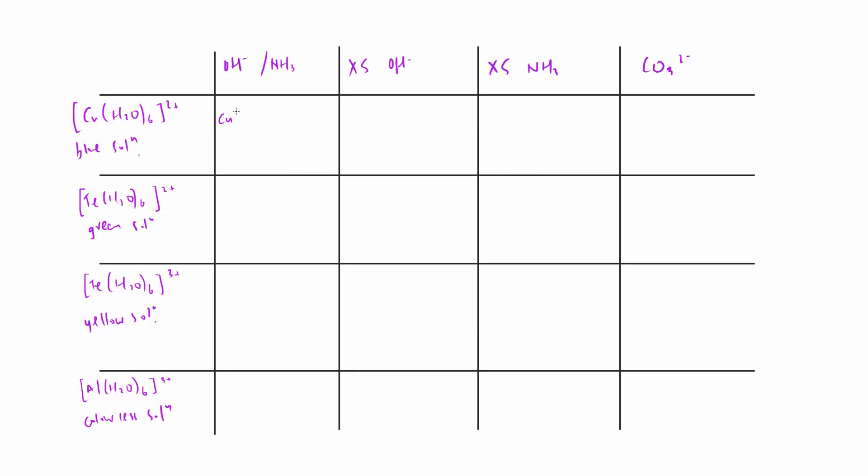We have initially the Cu(H2O)4(OH)2 solid produced there, we're going to get nothing with that, we're going to produce the Cu(NH3)4(H2O)2 2+, and then finally this is the 2+, we're going to have CuCO3. Color-wise, we're going to have blue precipitate, we're going to have this deep blue solution, and then finally we're going to have a blue precipitate.